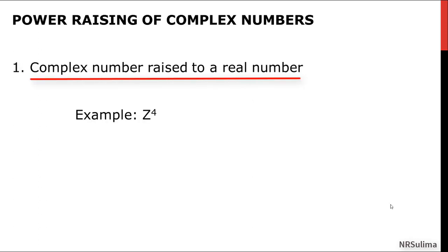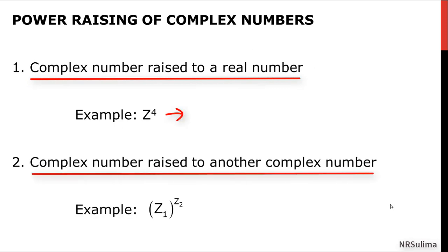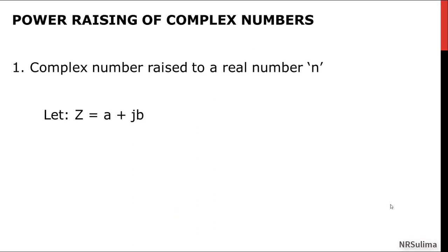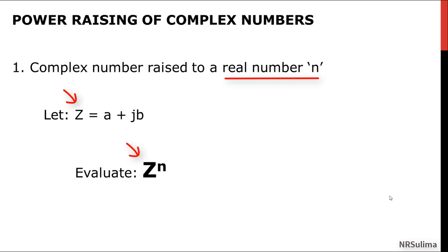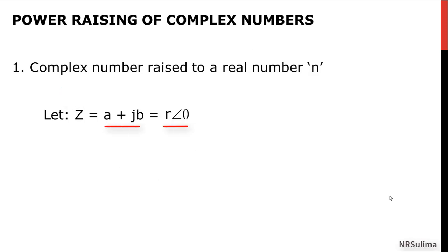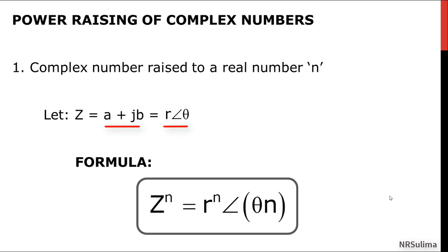There are generally two types of power raising of complex numbers. The first one is when a complex number is raised to any real number, such as Z raised to the power of 4. The second one is when a complex number is raised to another complex number, like Z1 raised to the power of Z2. If a complex number is raised to any real number N, and you have a rectangular complex number A plus Jb, to evaluate Z raised to the power of N, convert A plus Jb into polar form to use the formula Z to the N equals R to the power of N, angle theta times N.